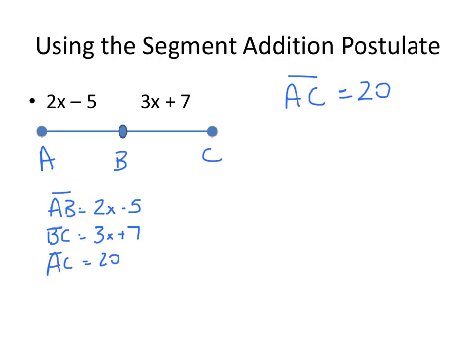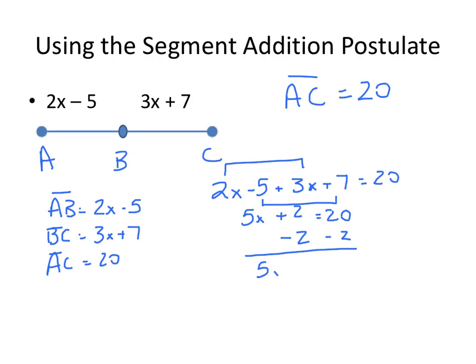So we can set this up as an algebraic equation so that 2x minus 5 plus 3x plus 7 is equal to 20. And that means that 5x plus 2, combining like terms, is equal to 20. We can subtract 2. That leaves me with 5x equal to 18. And then if we divide by 5, we find that x is equal to 18 fifths.